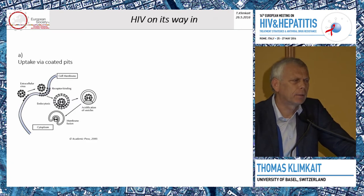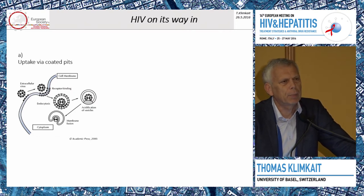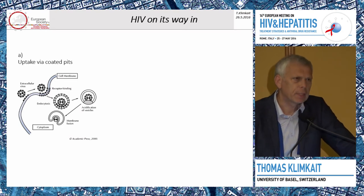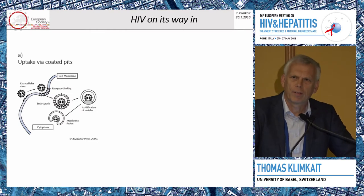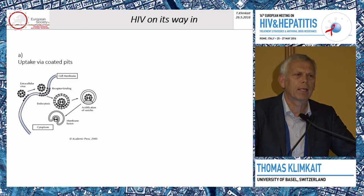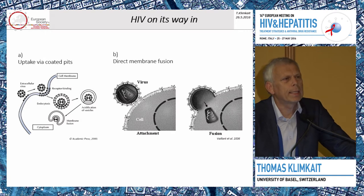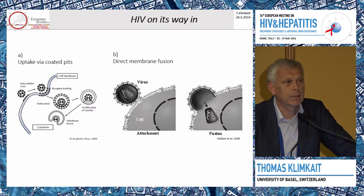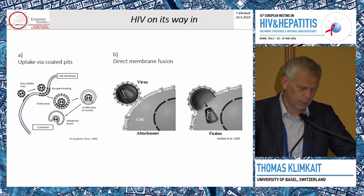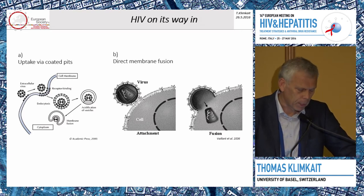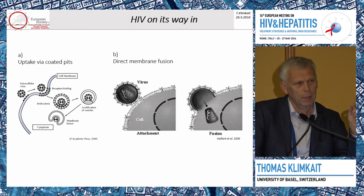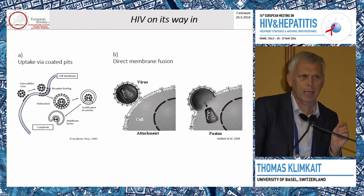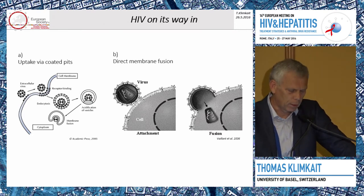How does uptake happen? We've discussed this for a number of years and gone back and forth. We now believe there are two key principles of how HIV enters its host cell. The first, comprising almost half of what it does depending on cell type, is entry into coated pits as we know from other viruses, with fusion inside the coated pit. Or it can be a direct membrane fusion at the surface of the membrane, always liberating the intact nuclear capsid within which reverse transcription occurs - forming the reverse transcription complex. We are dealing with this very early step of a virion outside the cell, before reverse transcription.